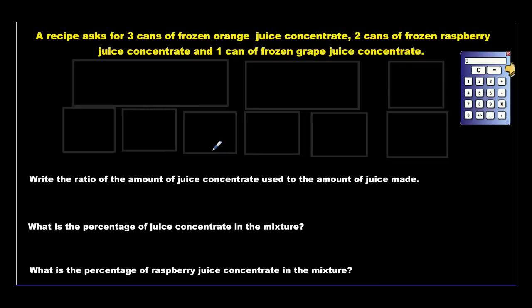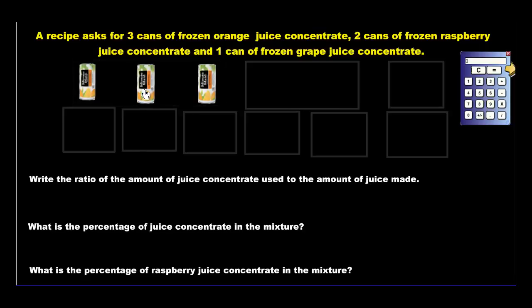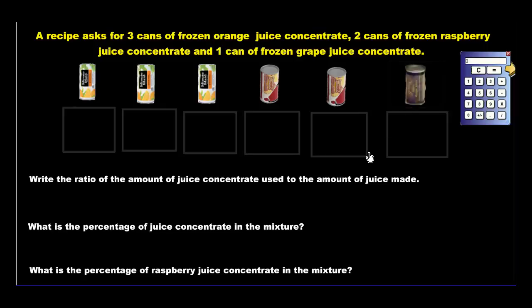Let's finish off with some flavors. We've got a recipe asking for 3 cans of frozen orange juice concentrate, 2 cans of frozen raspberry juice concentrate, and 1 can of frozen grape juice concentrate. We're going to mix it all together. So here's what it looks like. I've got my frozen orange juice concentrate, 2 cans of frozen raspberry, and 1 can of frozen grape juice.